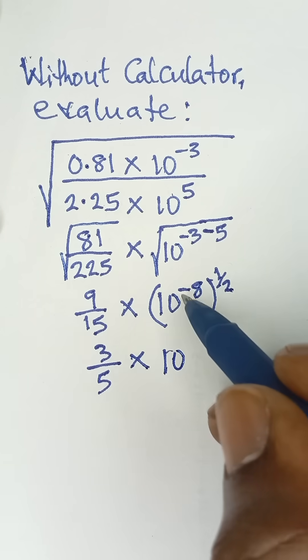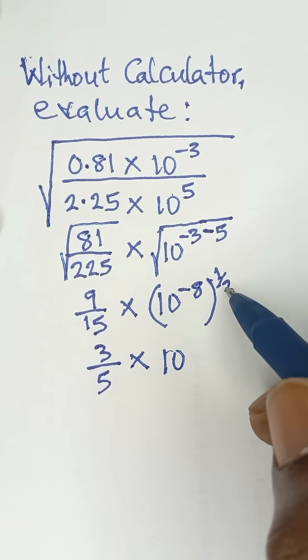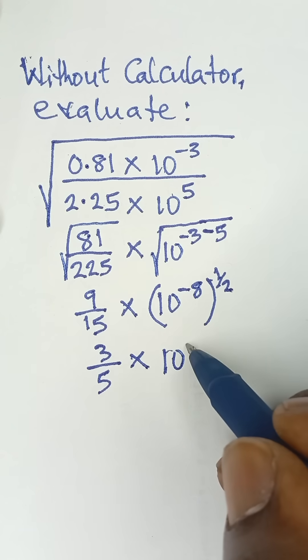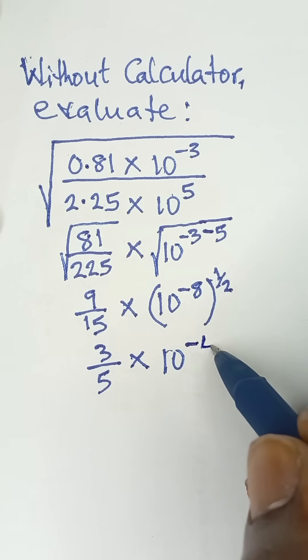Then multiplied by 10 raised to the power negative 8 multiplied by half, because we are multiplying powers in indices like this. So this multiplied by this will give us negative 4.